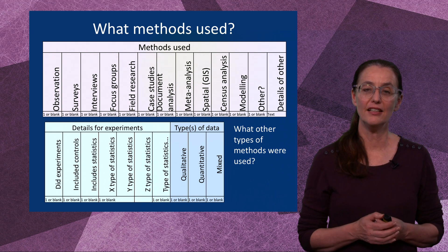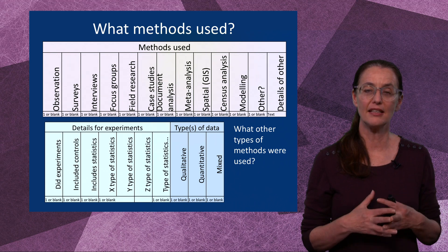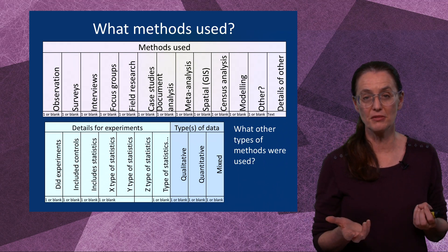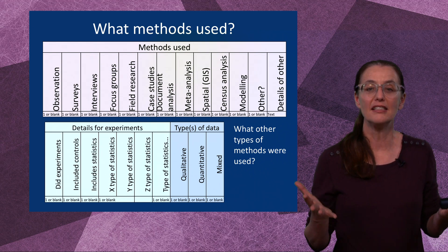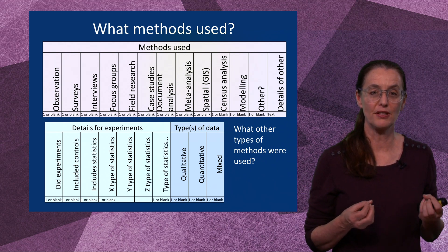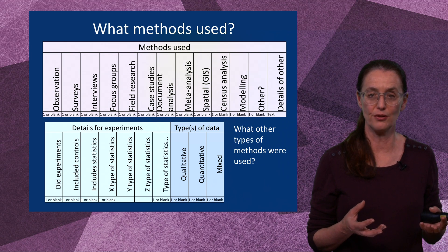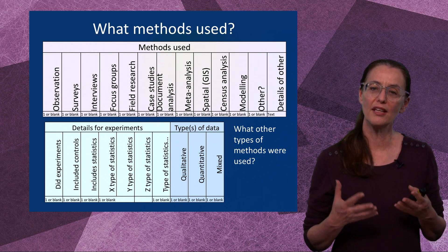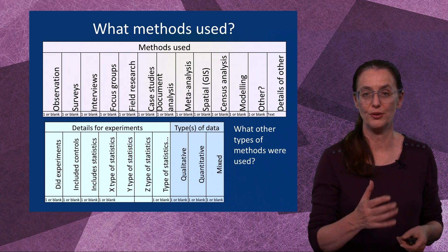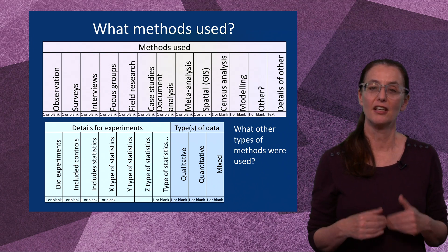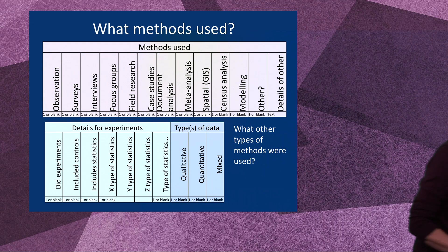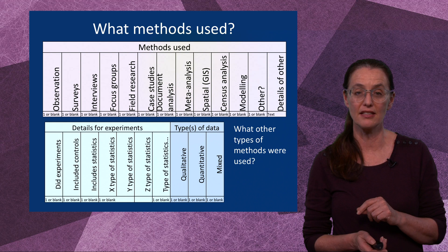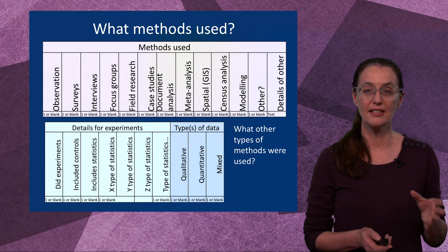For methods, you want to have lots of subcategories. Think at the beginning about what the methods could be: observation, surveys, interviews, focus groups, field research, case studies, document analysis, meta-analysis, spatial analysis, census analysis, modelling, and an 'other' category. If it involved experiments — did it include controls, did it include statistics, what type of statistics were included? Was it quantitative only, qualitative only, or mixed methods? Think about what other types of methods are used in your area and put those categories in. By doing it with subcategories, a particular study may use case studies and document analysis, or may use several different types of statistics — and this allows you to record that.